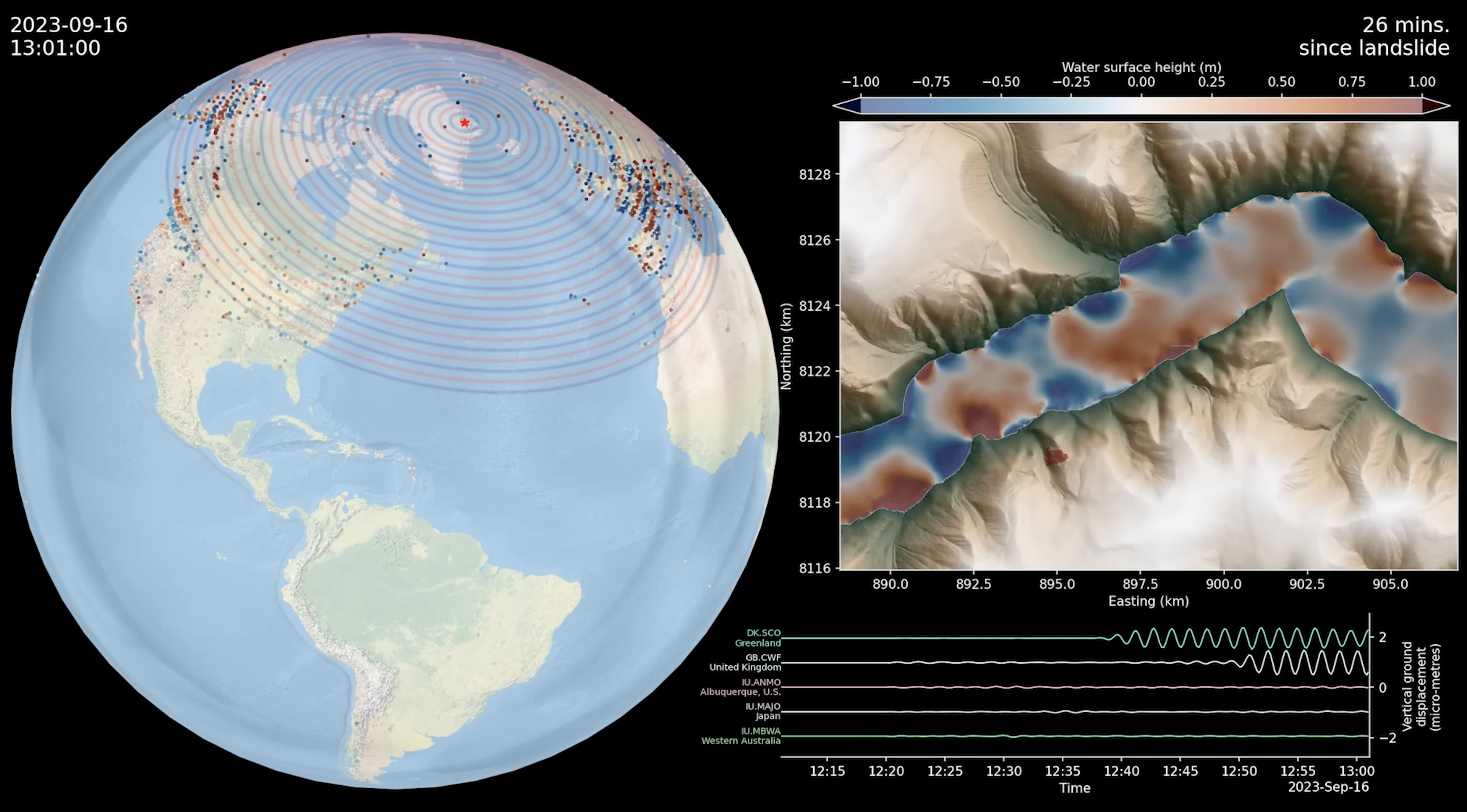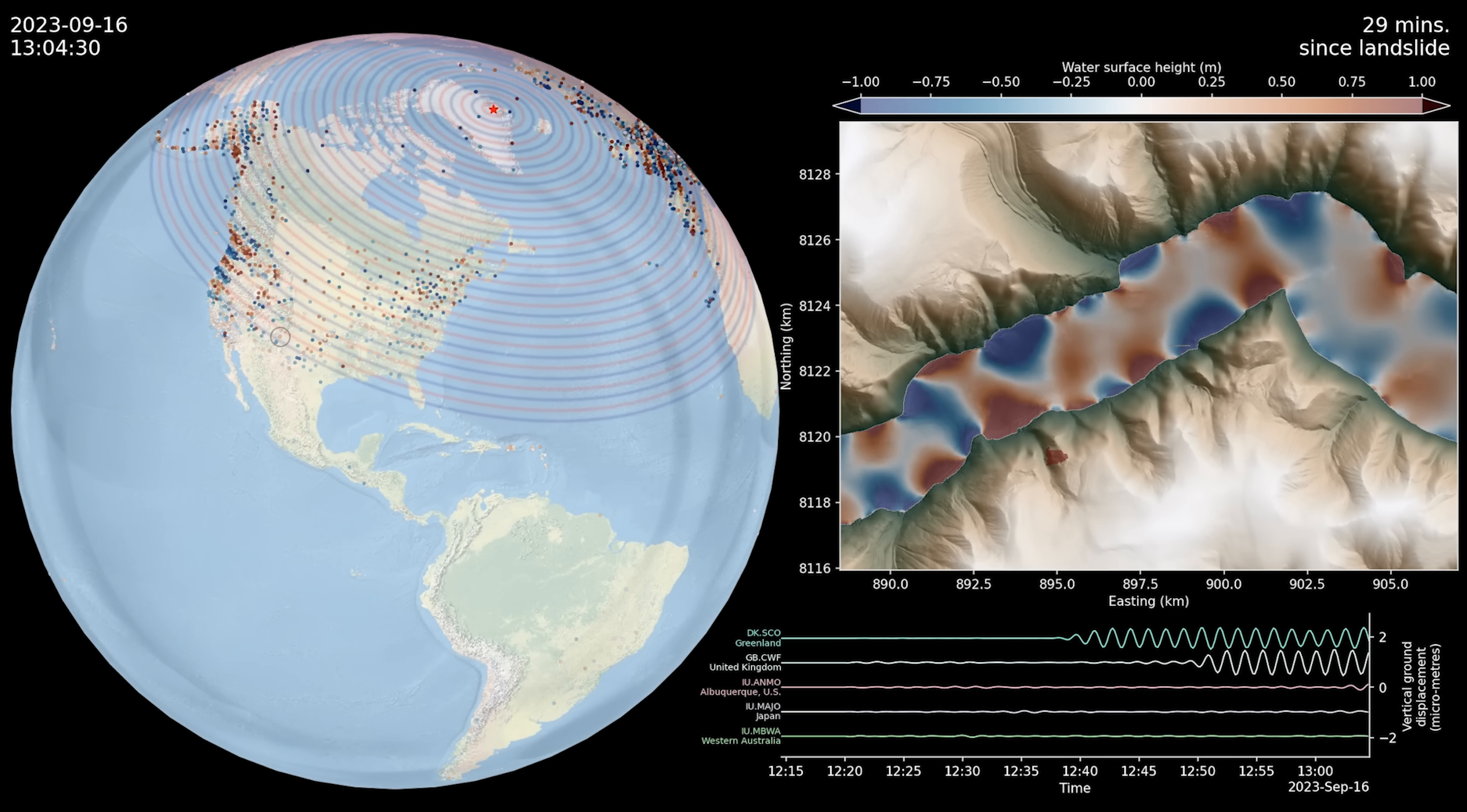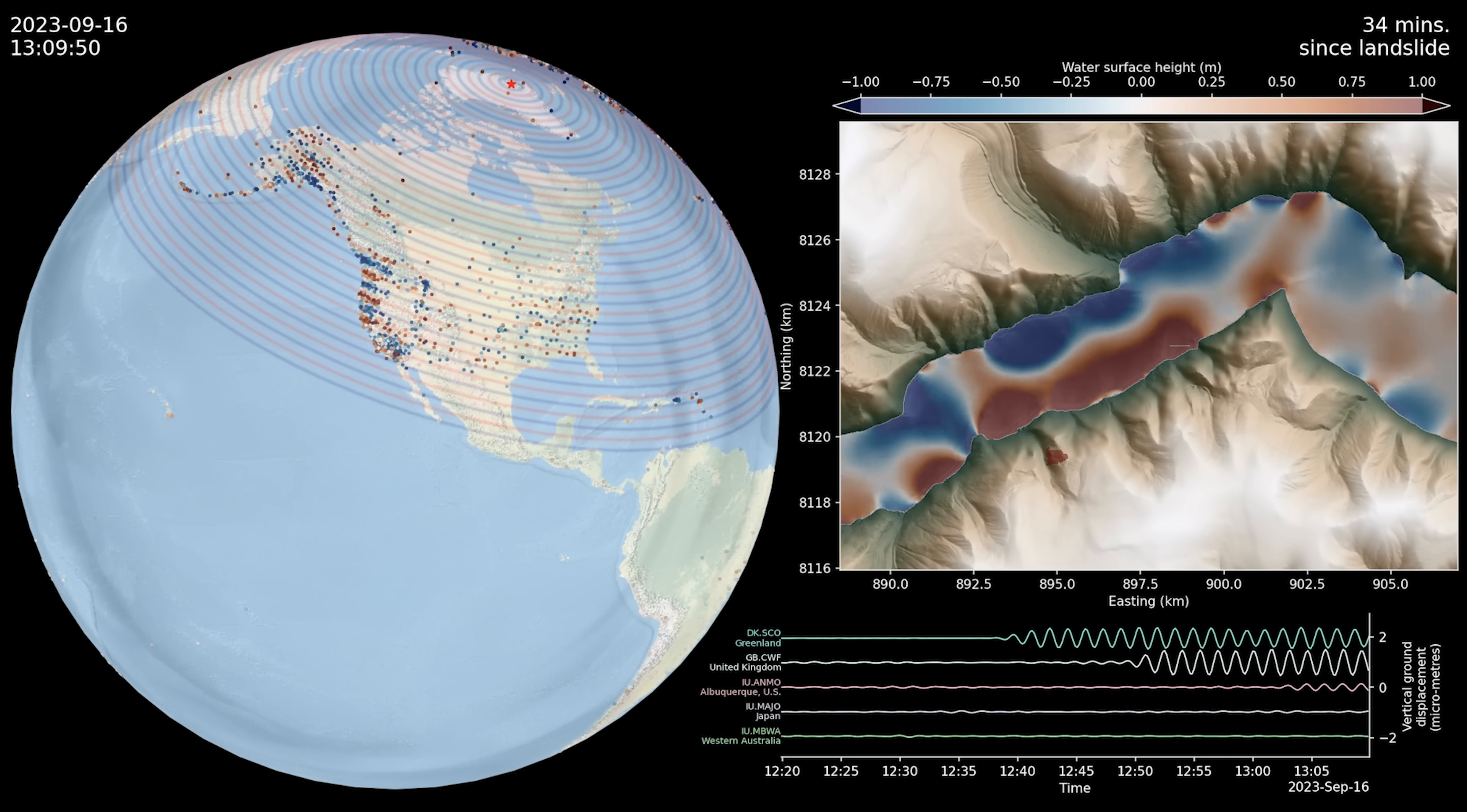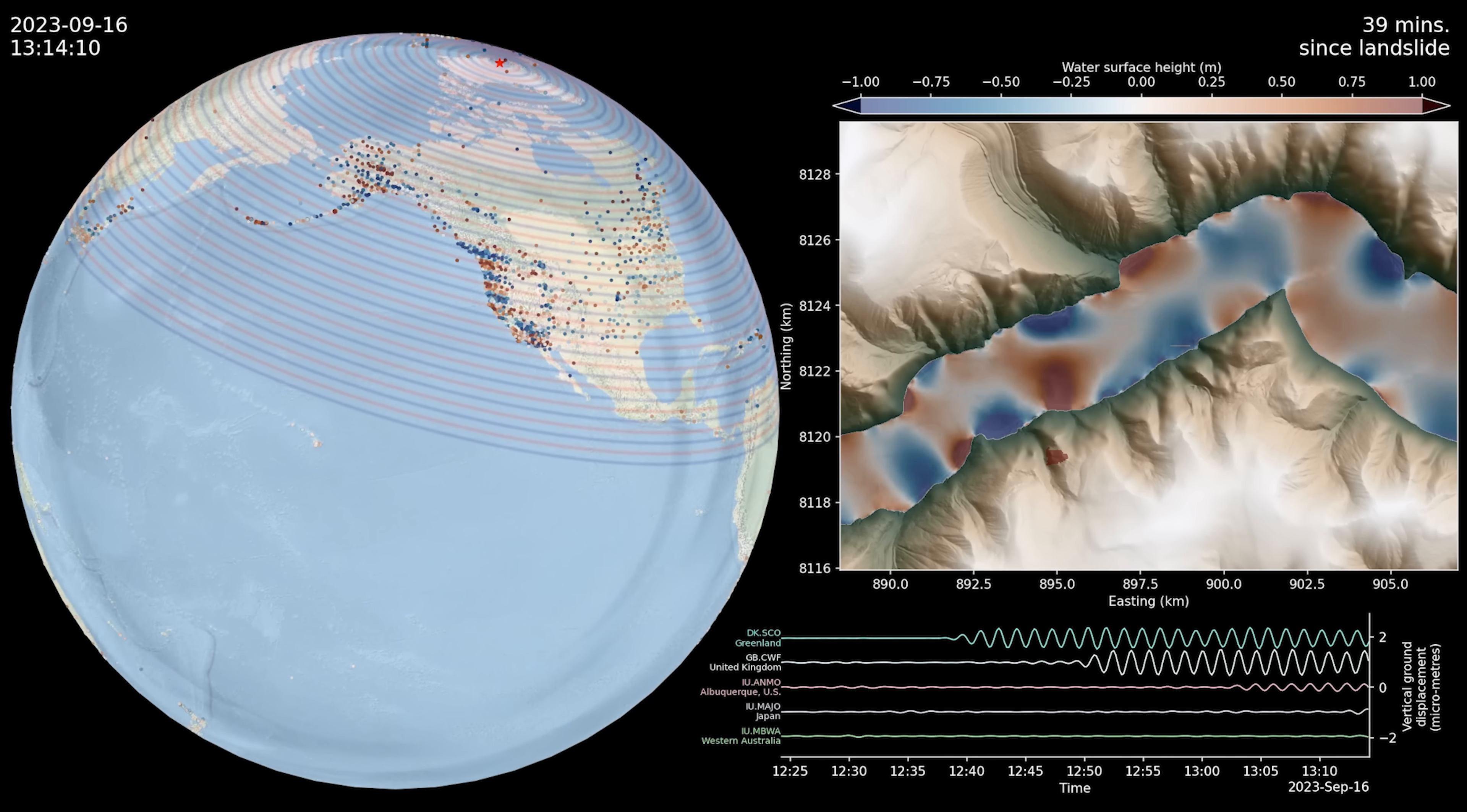This back and forth motion of the fjord water's center of gravity transferred momentum into the fjord walls, transmitting seismic energy through the surrounding crust. It was this seiche, like a beating heart in Dixon Fjord, that caused the seismic waves to spread all over the world.